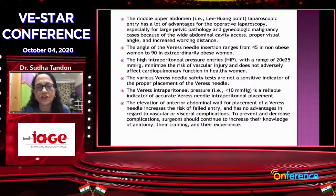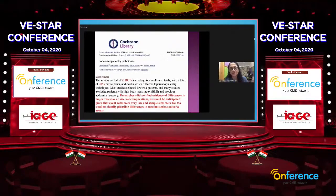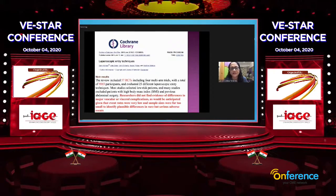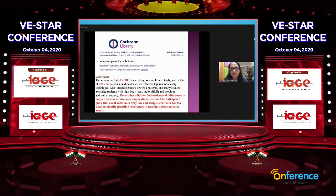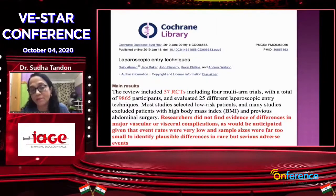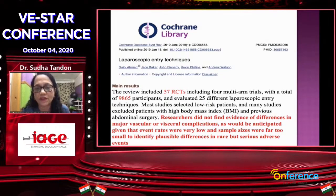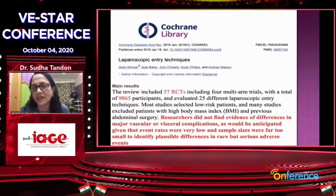The high intraperitoneal pressure is very useful. This was the Cochrane review — 57 RCTs were studied with almost 10,000 patients evaluated. They found no difference in major vascular or visceral complications, which is an important take-home message, as the event rates were very low and the sample size was far too small to identify possible differences in rare but serious adverse events. Basically, you have to be familiar with all the ways — at least two to three techniques. If one fails, you can go to the other one. Thank you very much.